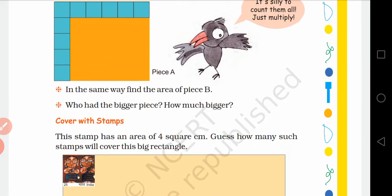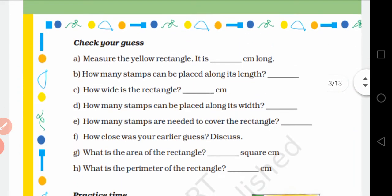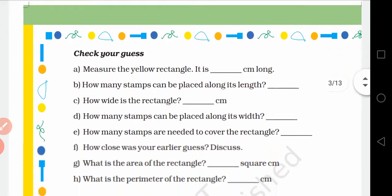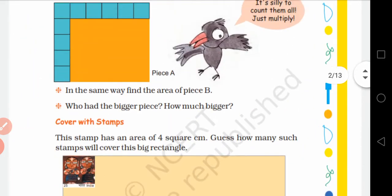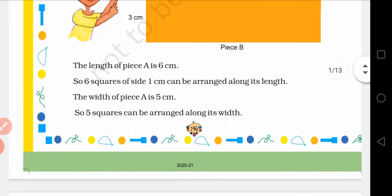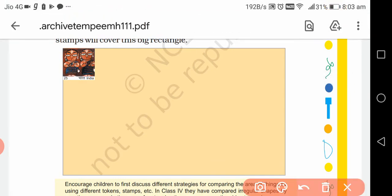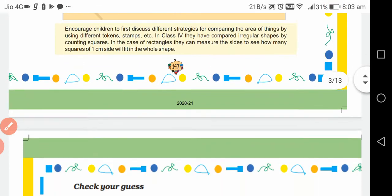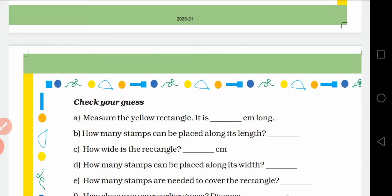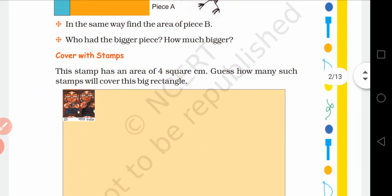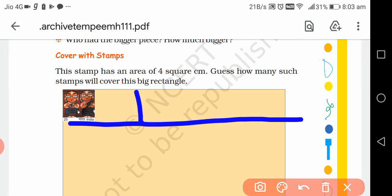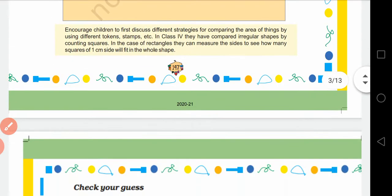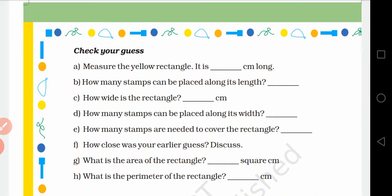A aur B decide karna hai kaun sa shape bada hai. A ka area find out karna hai, B ka area find out karna hai. Similarly ye jo big rectangle diya hua hai page number 147 me, uska kitna area hoga ye bhi aapko batana hai. Measure the yellow rectangle - it is how many centimeter long. Yellow rectangle ko measure karna hai aur iska kitna centimeter long hai ye batana hai. How many stamps can be placed along its length? Two, three, four, five, six - so I think six stamps can be given on its length. How wide is it, the rectangle? Uska width kitna hai ye aapko measure karke batana hai. How many stamps can be placed along its width?